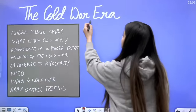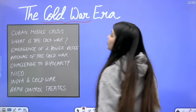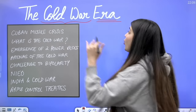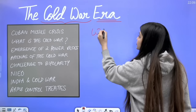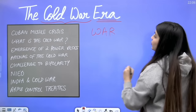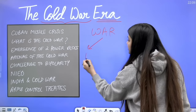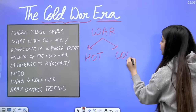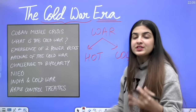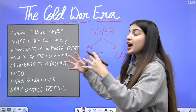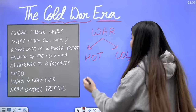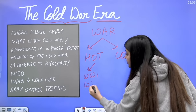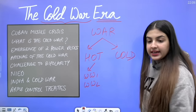The chapter is called the Cold War Era — era meaning a time period. Now, we have all heard the word 'war', but what is the Cold War? War is of two types: one is Hot War and one is Cold War. Hot War is what we have seen in movies — there are armies, bombs fall. For example, World War 1 and World War 2 — these are called Hot Wars.